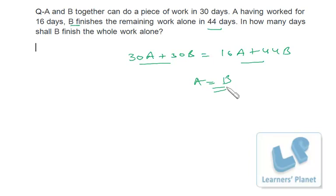So if A and B together can do the piece of work in 30 days, that means individually they can do the work in 60 days. Because A and B's efficiencies are the same, both of them will take an equal number of days individually to work alone.